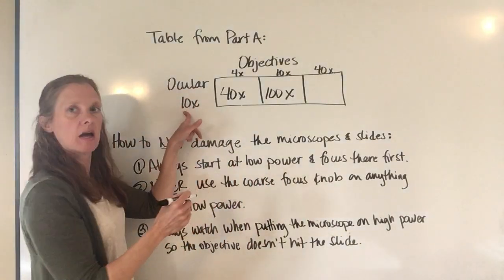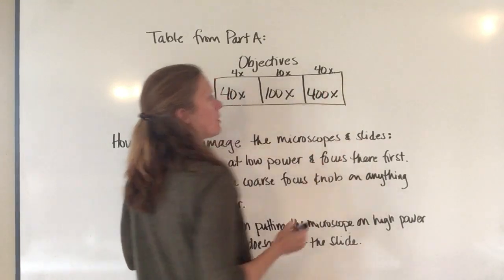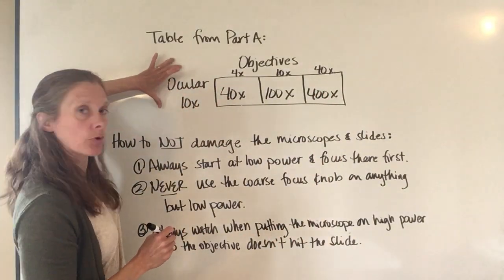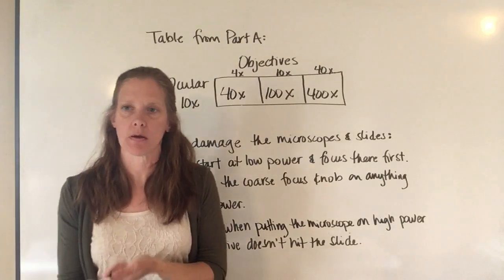The high power times the 10 times of the ocular gives you 400 times magnification. I want this table in your lab notebook, so make sure you get that put in there in the appropriate place.